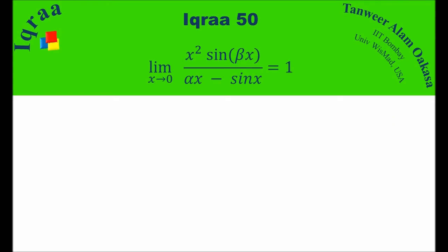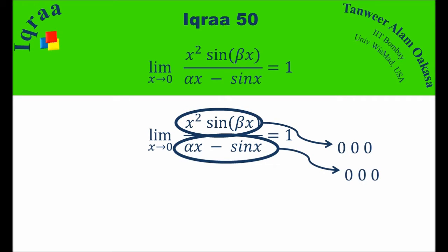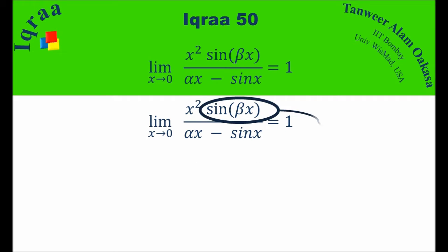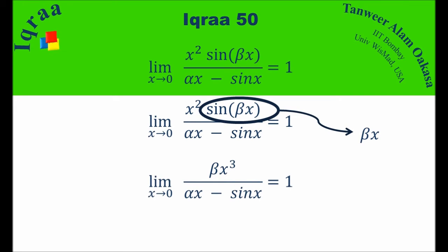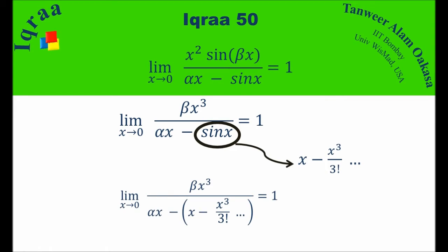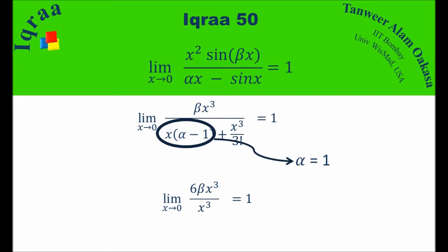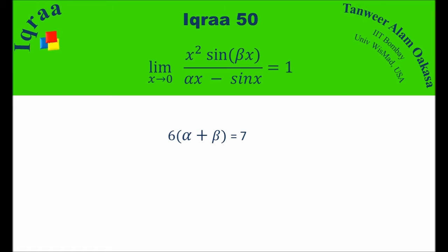Let's start with the limits question. We need to find alpha and beta such that the limit as x→0 of x² sin(βx) / (αx − sin x) equals 1. The numerator has 3 zeros, so the denominator also needs 3 zeros for a finite limit. Approximating sin(βx) ≈ βx gives x³ in the numerator. Using the series sin x = x − x³/6 in the denominator, to cancel the first term we get α = 1. This gives 6β x³/x³ = 1, so β = 1/6, and thus 6α + β = 7.